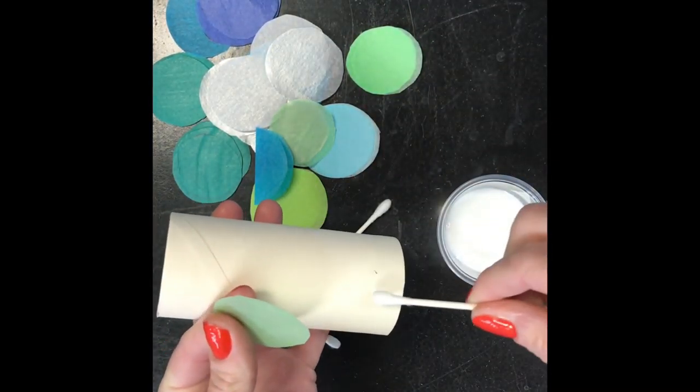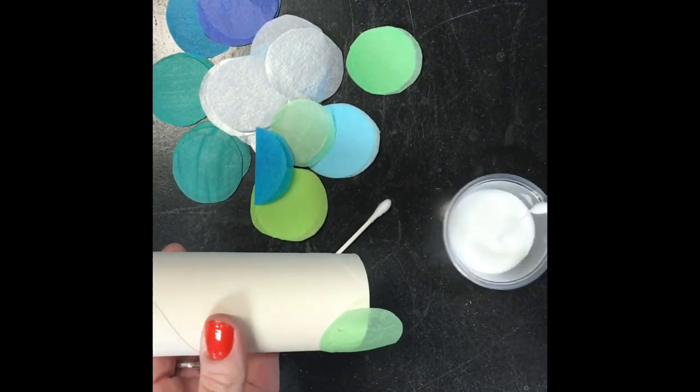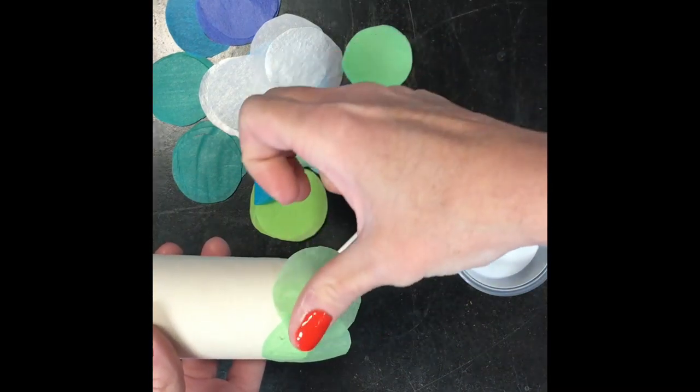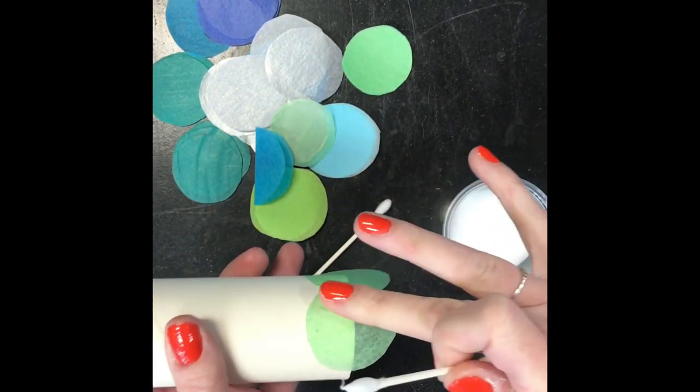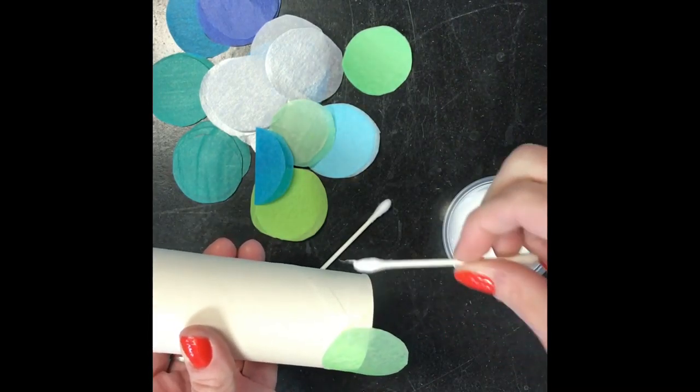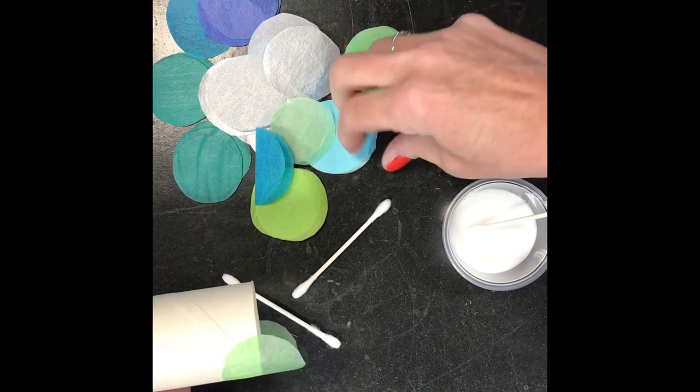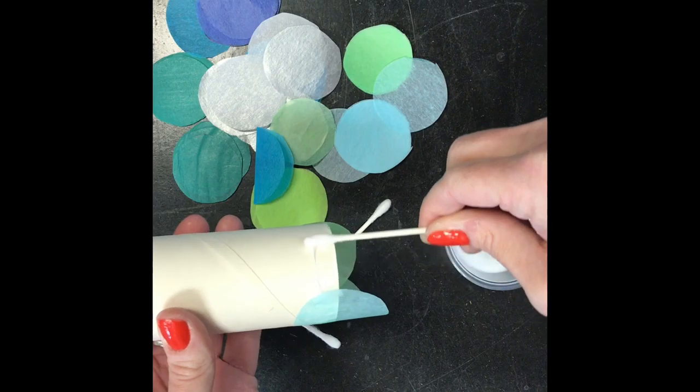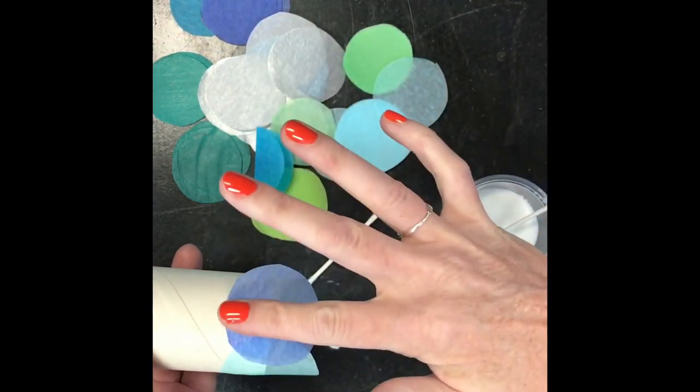Starting at the bottom of the cardboard tube, we're going to put a thin layer of glue and then add these tissue paper circles. There are two ways you can do this. I'm going to start with them keeping their circle shape. The other way, you can see the blue in there that's folded in half. It's totally your personal preference. I'm going to show you both on this model.